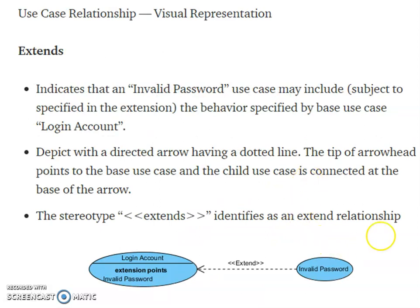And relationship is shown by this one, extends. It indicates that here the invalid password. This login account is the parent case. Here this invalid password, this one is the child case. That is the tip of the dotted arrow mark represents the parent case, and this one represents the child case. Depict the directed arrow having the dotted line, and tip of arrowhead points to the base use case, and the child use case is connected at the base of this one. The stereotype extends identifies as an extend relationship.